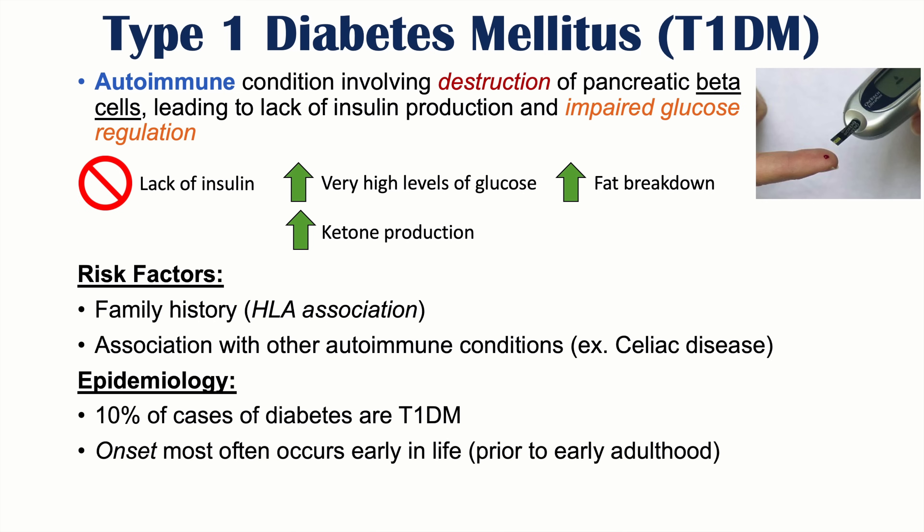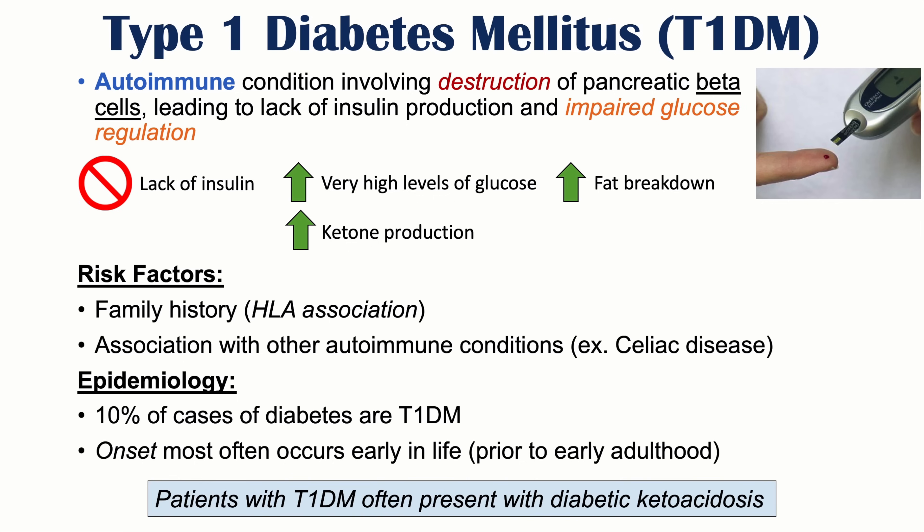The onset of type 1 diabetes most often occurs early in life, usually prior to early adulthood — more often in children or adolescents — differing in age of onset compared to type 2 diabetes. The onset and symptoms of type 1 diabetes present suddenly, and it often presents with what we call diabetic ketoacidosis, which we will discuss in this lesson.